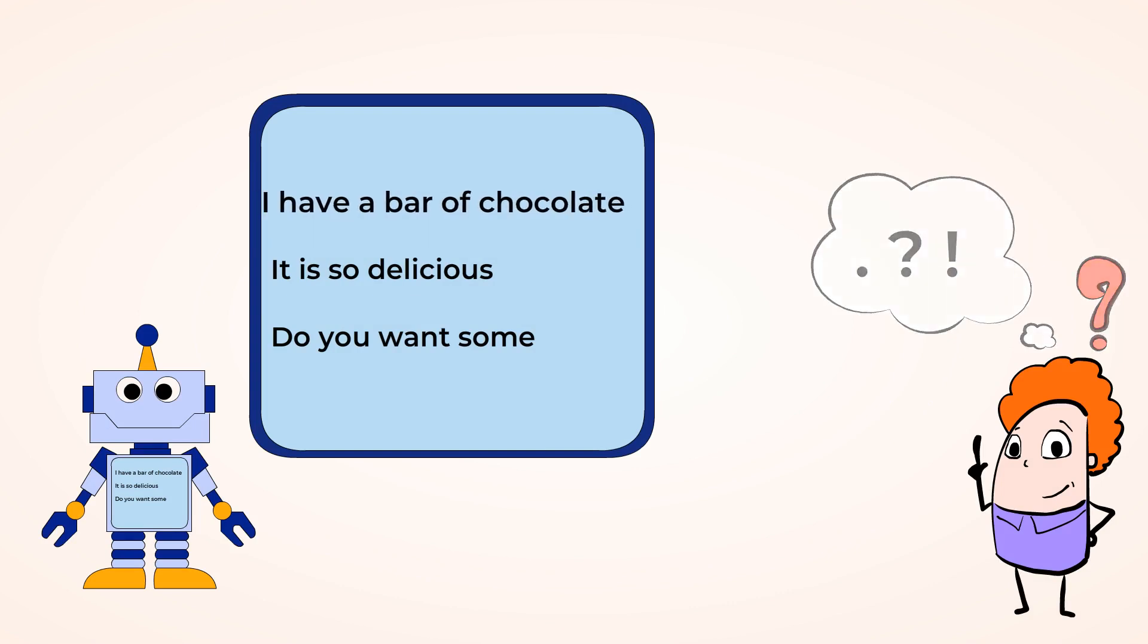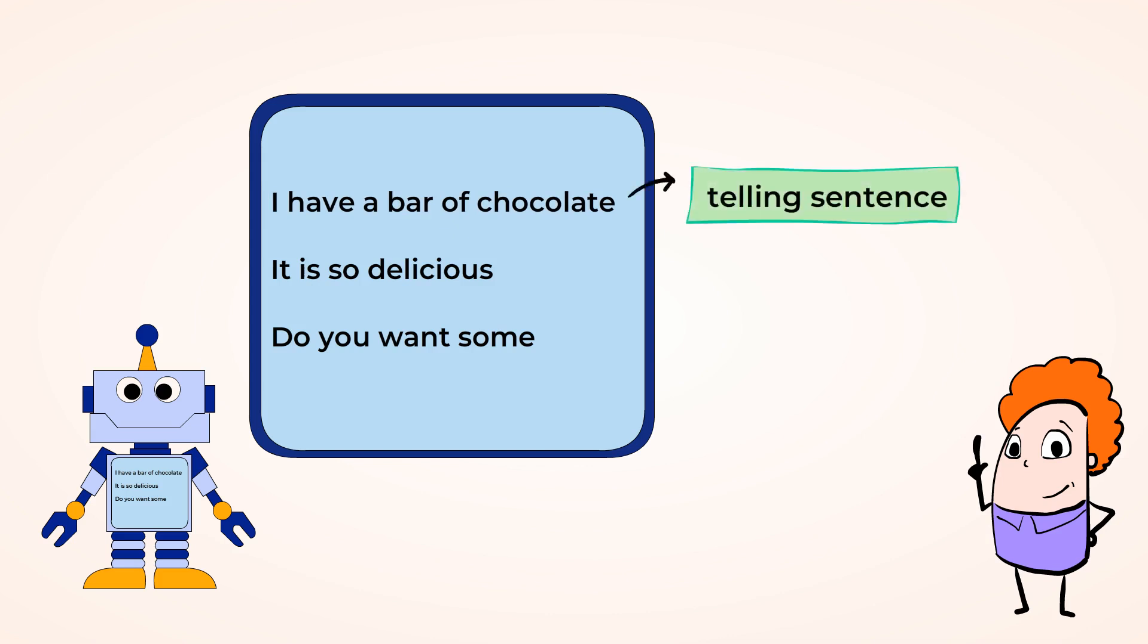Now the first sentence is, I have a bar of chocolate. Is this a telling or asking sentence? Well since it's just telling us information, it's a telling sentence. And we need to add a period.